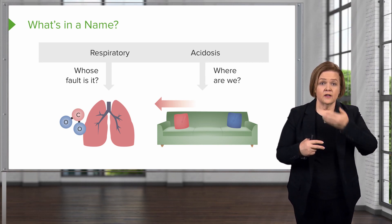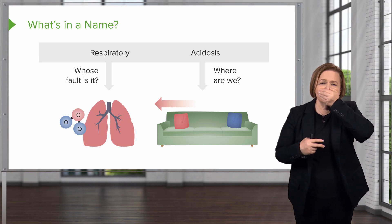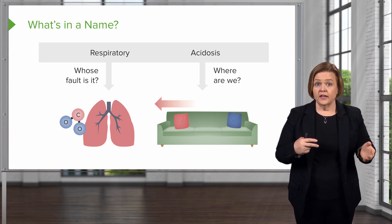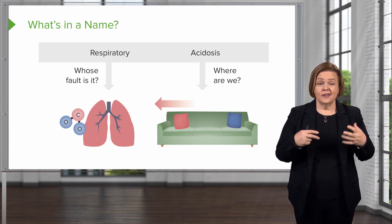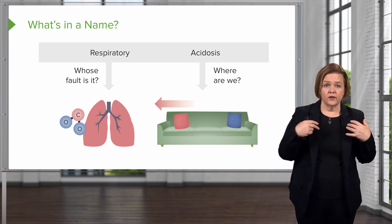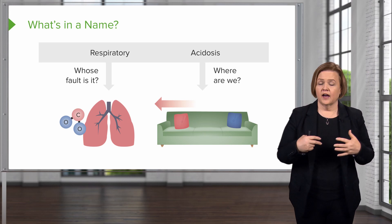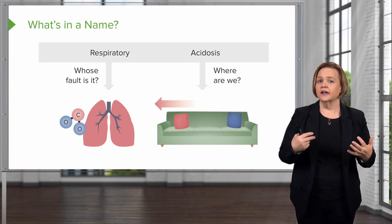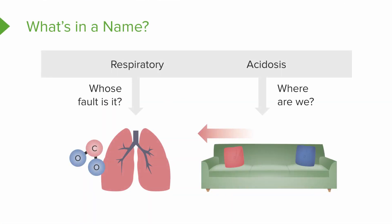It could be that you've taken too many opiates and so you're breathing really shallow. Or it could be an asthma attack or maybe a COPD attack. Any one of those things that causes me to breathe inefficiently will cause CO2 to build up. The more CO2 that builds up, the more acidotic my pH will become. That's why we showed you the couch and got you moving that way.